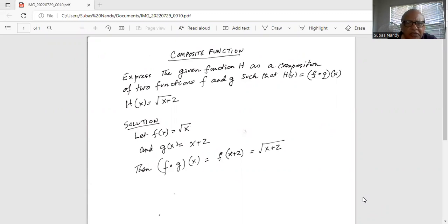H(x) is given as square root of x plus 2. For F composite G, let's define F(x) as square root of x and G(x) as x plus 2.